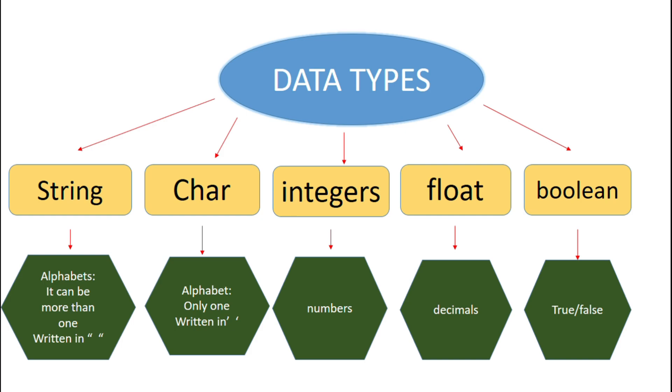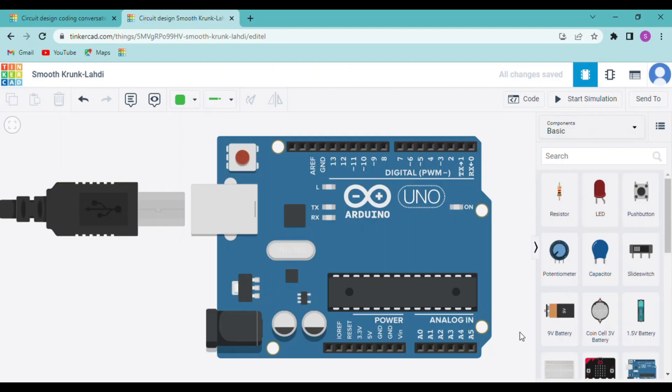Finally, boolean — it is nothing but true or false. If the condition is true then the code is executed, otherwise it is omitted.